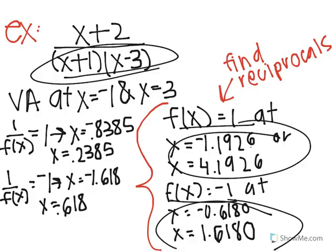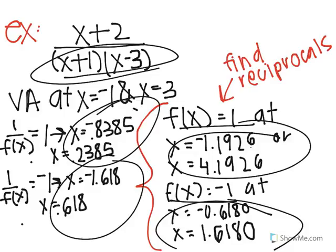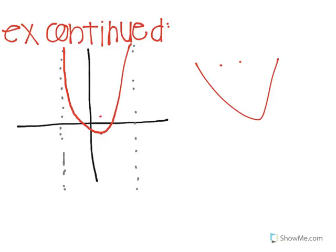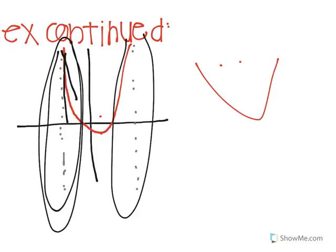And then I took the reciprocal of these because it's the reciprocal of the graph and used these points to plot the graph. It's going to go down and it has this vertical asymptote here and here.